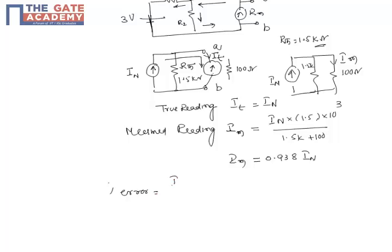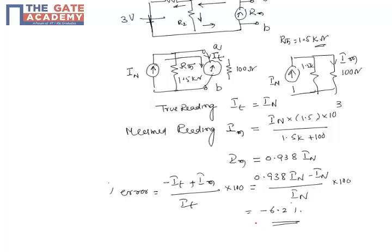The percentage error is (measured value minus true value) divided by true value times 100. This equals (0.938 In minus In) divided by In times 100. If you simplify this, you get -6.2%, or simply 6.2%. Let me check the options.